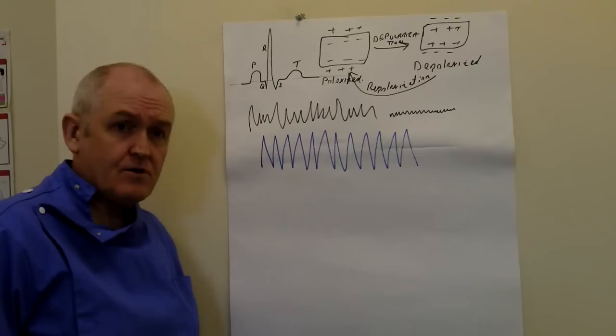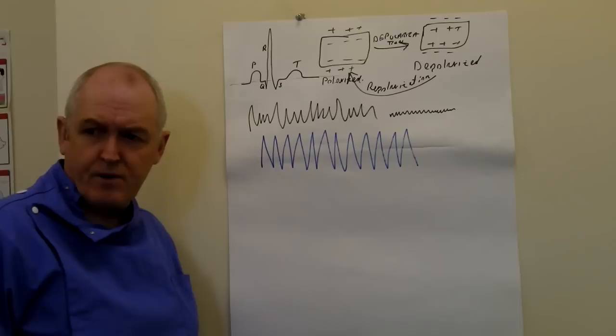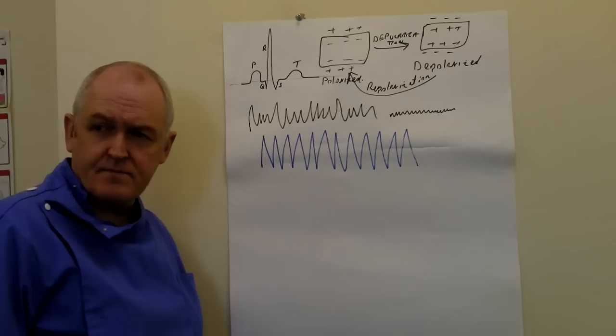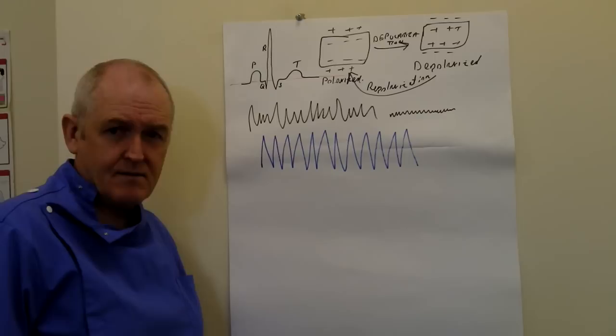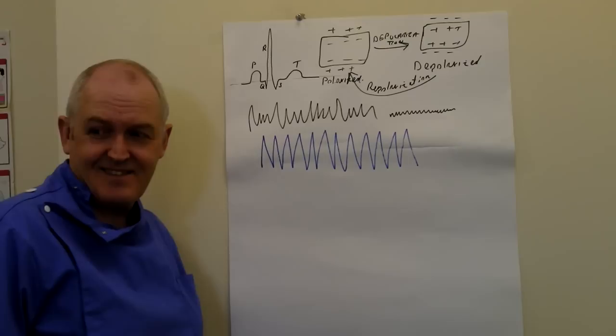A myocardial infarction is caused by coronary arterial thrombosis, which is usually caused by destabilised atheromatous plaques. And atheromatous plaques are caused by bad diet, smoking, and all the things we don't do because we're clean living. It's also genetic, so anyone can get it.